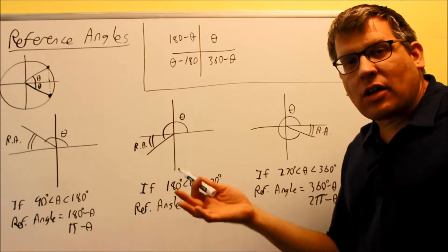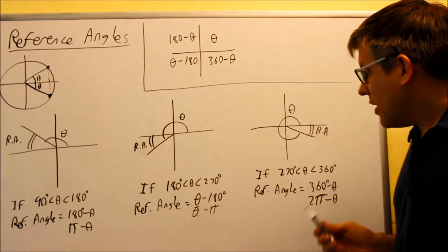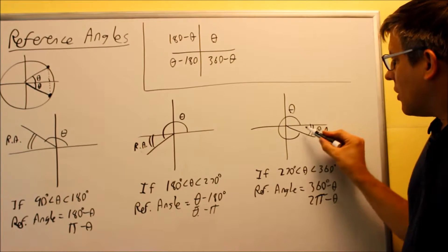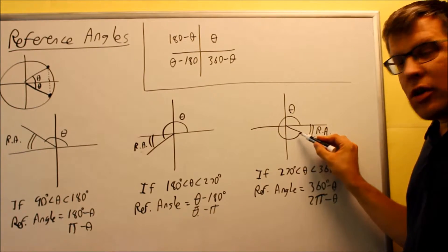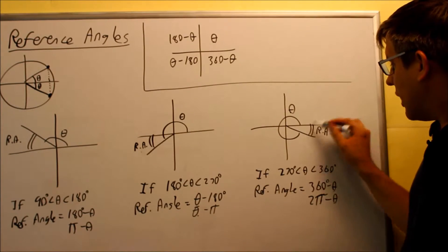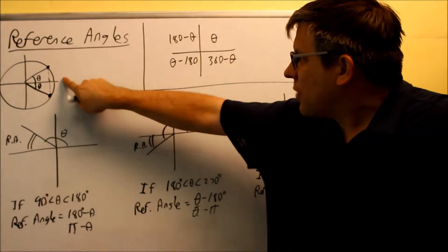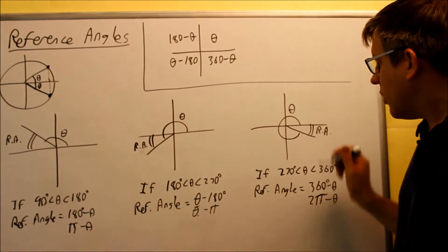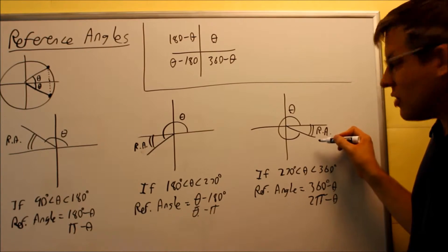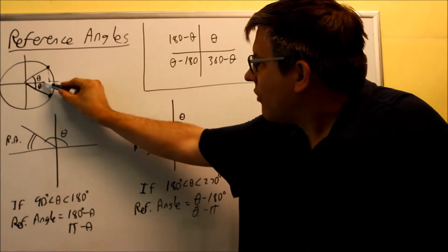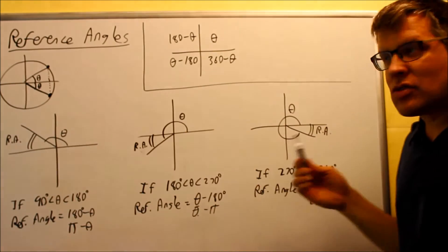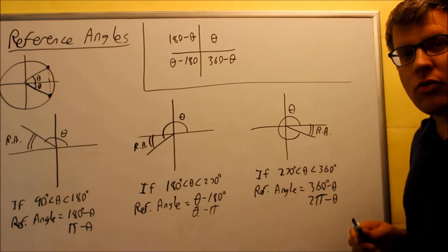The reference angle will always take you back to an angle between 0 and 90. For the fourth quadrant, the formula is 360 minus theta. Going all the way around would be the full angle, and the small angle measured to the closest x-axis is your reference angle. The angle may be between 270 and 360, however the value measured from the x-axis there is the same as from the x-axis in the first quadrant, giving you the same numerical value.